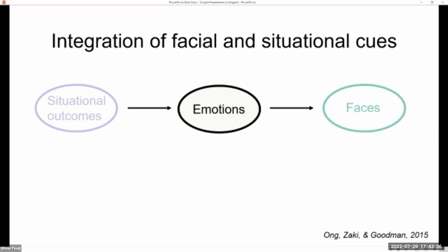So building on this Bayesian network, an equation for integration of facial and situational cues was derived by Ong and colleagues. And this equation or this model of cue integration basically captures people's beliefs about inferring emotions given knowledge of an agent's situation as well as their facial behaviors. I won't go into the specific derivation of this equation, but I will illustrate the components of this equation using an example.